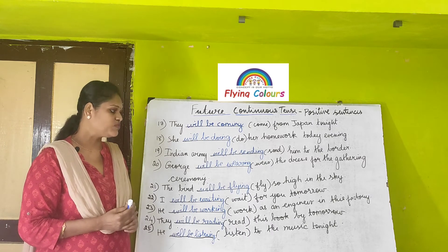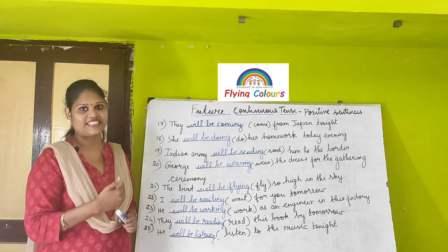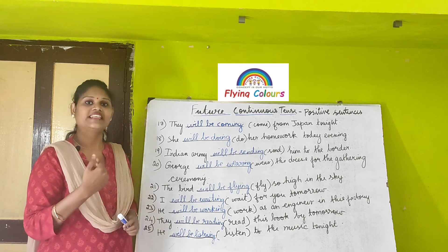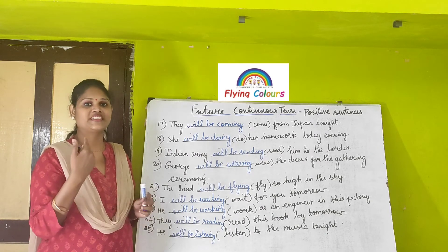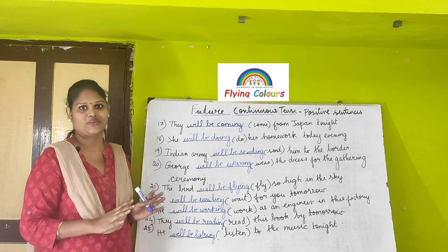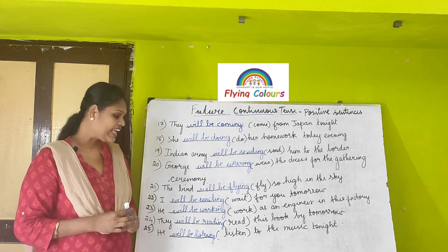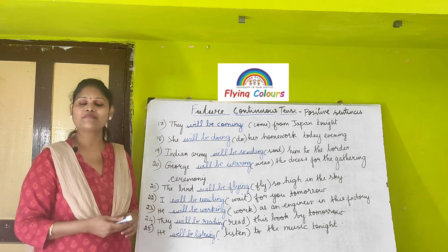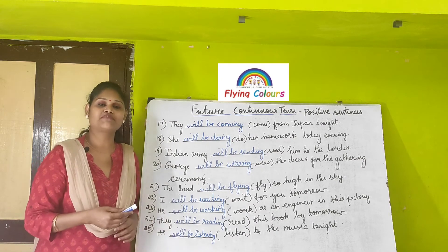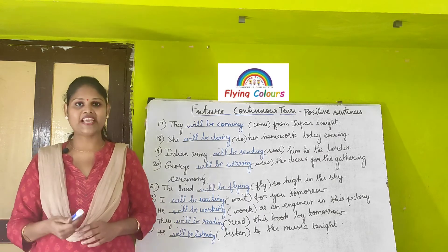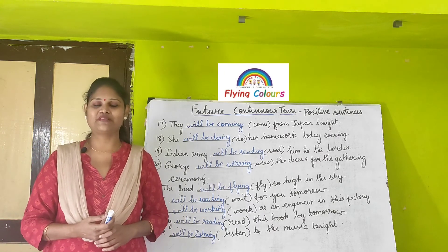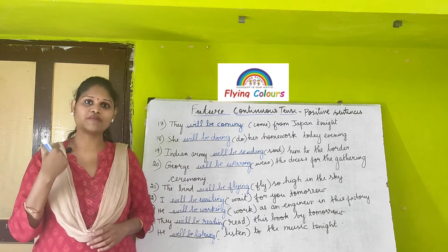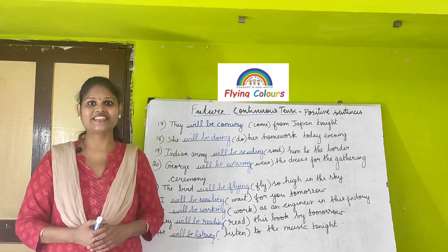Next: 'They will be reading this book by tomorrow.' 'They' is the subject, plus will plus be plus 'reading.' Just change 'read' into 'reading' by adding -ING. Last sentence: 'He will be listening to the music tonight.' The main verb is 'listen,' so 'he' is the subject, plus will plus be plus 'listening' as the present participle. This is future continuous tense.